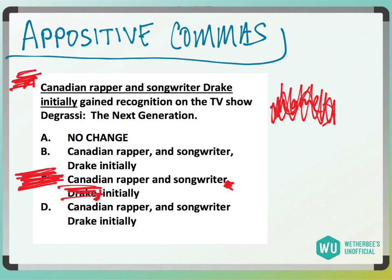If we look at answer choice B, it's 'Canadian rapper, comma, and songwriter.' We don't want to put 'and songwriter' in a set of commas. He's a rapper and songwriter, so you don't want the commas around there, because it's not really a dependent clause or anything like that. He's a rapper, he's this and that — you wouldn't want to put a comma between rapper and songwriter. So answer choice B is gone.